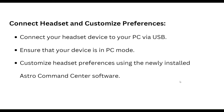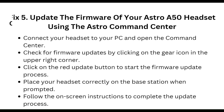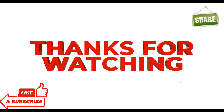Our fifth step is to update the firmware of your Astro A50 headset using the Astro Command Center. Connect your headset to your PC and open the Command Center. Check for a firmware update by clicking the gear icon in the upper right corner, then click the red update button to start the firmware update process. Place your headset correctly on the base station when prompted and follow the on-screen instructions to complete the update process. That covers all the steps — thanks, and don't forget to subscribe to our YouTube channel.